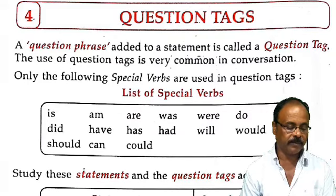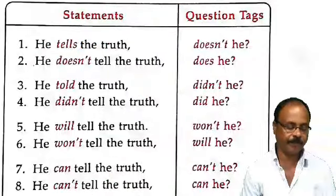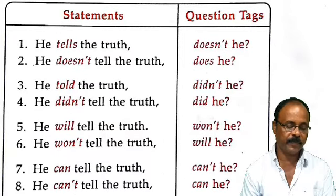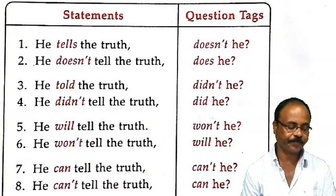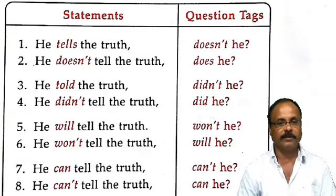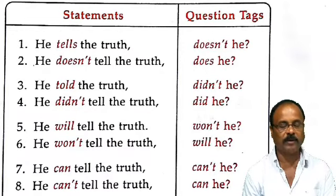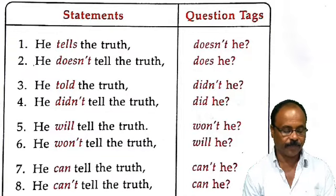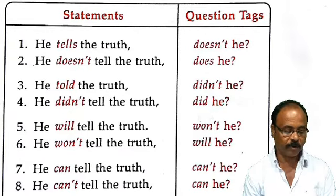Let us study the table given in your textbook. On the left side are statements and on the right side question tags. Number 1: 'He tells the truth.' — 'Doesn't he?' 'He does not tell the truth.' — 'Does he?' 'He told the truth.' — 'Didn't he?' 'He did not tell the truth.' — 'Did he?'